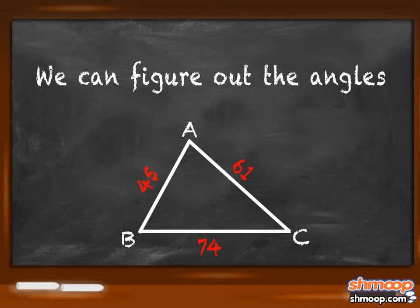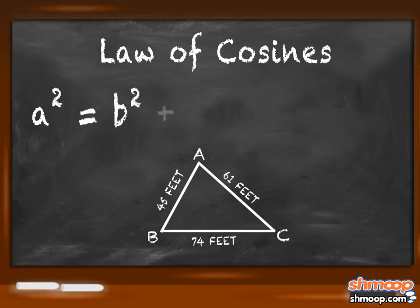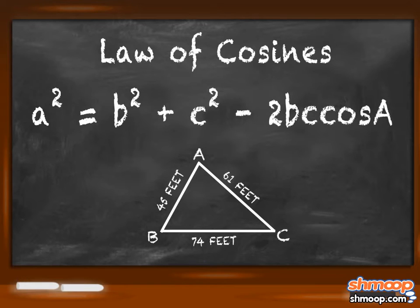The Law of Cosines tells us that a squared equals b squared plus c squared minus 2bc times cosine of the angle a.